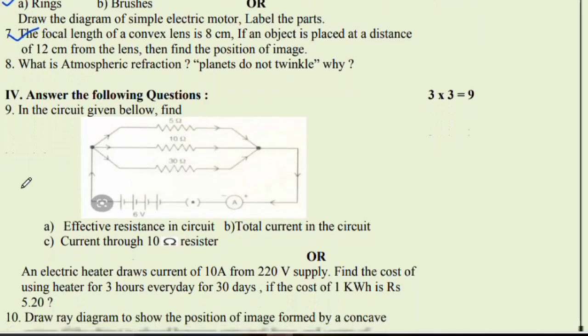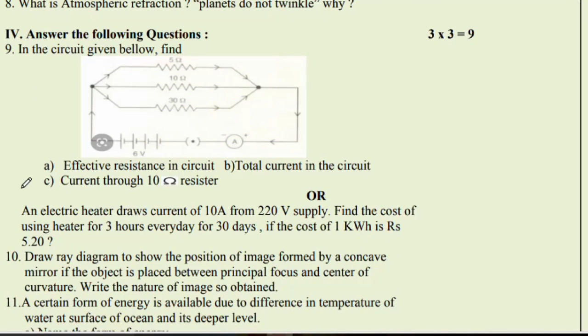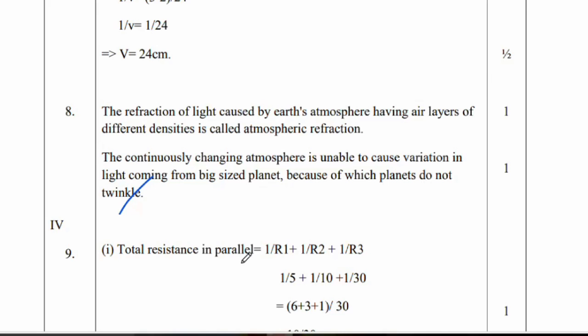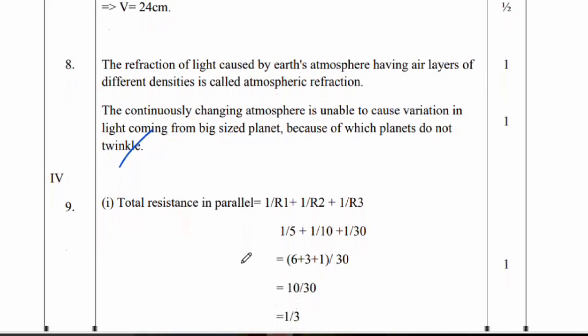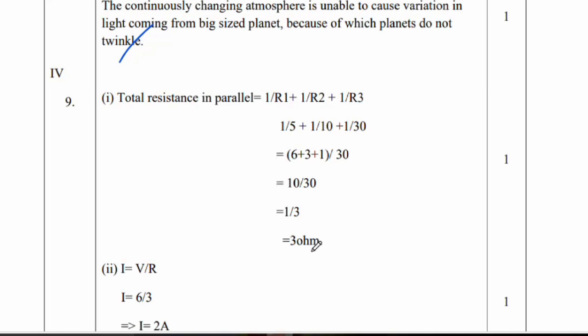Fourth main, 3 marks question. In the circuit given below, find effective resistance in circuit, total current, and current through 10 ohm resistance. So parallel connections, total resistance, 1 by R1 plus 1 by R2 plus 1 by R3. All resistance substitute, take LCM, we will get 3 ohm resistance.